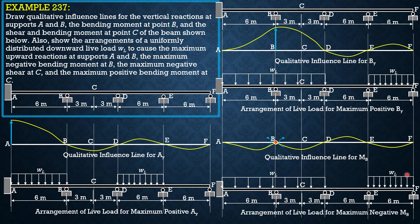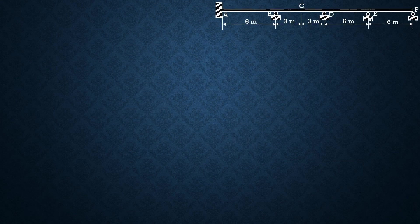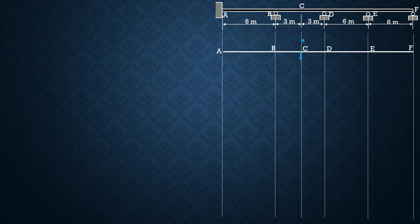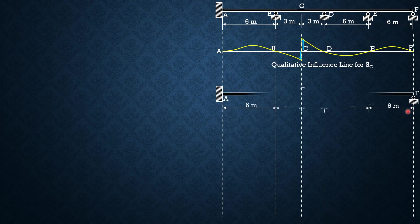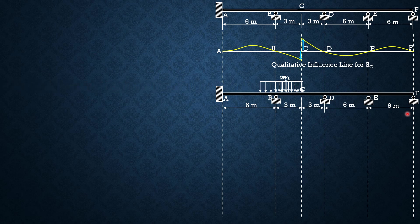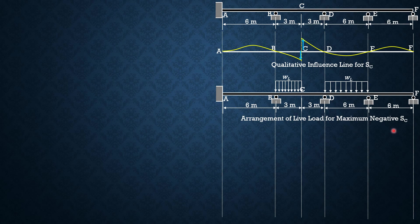That's the arrangement of live load for maximum negative moment at B. Next, for negative shear at C. We replace section C by a mechanism such that it cannot resist shear, then apply positive shear forces as shown. This will be the expected deflected shape, and that's the qualitative influence line for shear at C. To maximize the negative shear at C, we arrange the live load on portion BCD. That's the arrangement of live load for maximum negative shear at C.